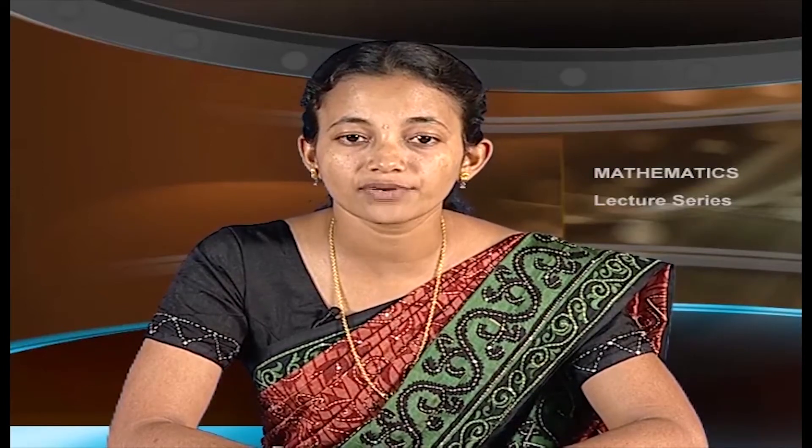Theorem 3: Let G be a group with identity E and G dash be a group with identity E dash. A homomorphism phi from G to G dash is 1-to-1 if and only if ker phi equals the set containing E. Proof: By part 1 of Theorem 2, phi of E equals E dash, so certainly E belongs to ker phi. Now, suppose phi is 1-to-1; then the only element of G mapped to E dash is E, so ker phi equals the set containing E.